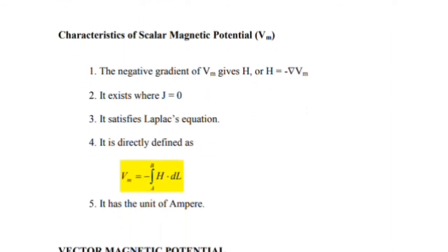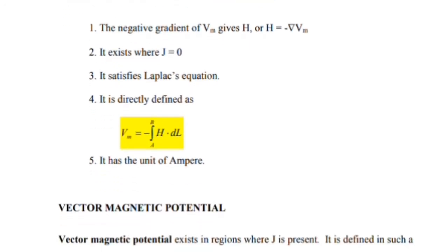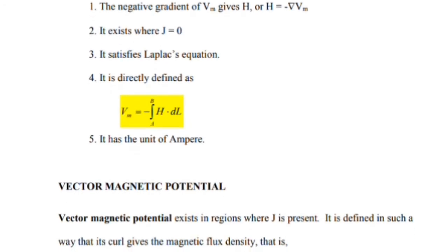Scalar magnetic potential is directly defined as Vm equal to minus the integral from A to B of H dot dL, where H dot dL equals Amperes. According to Ampere's circuit law, it has the unit of Ampere. The scalar magnetic potential has the unit of Ampere. It exists in the region where current density J equals zero.